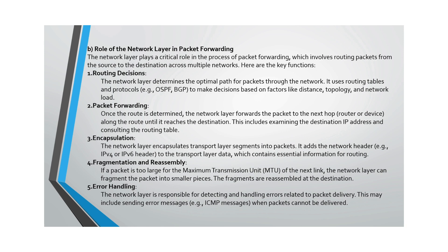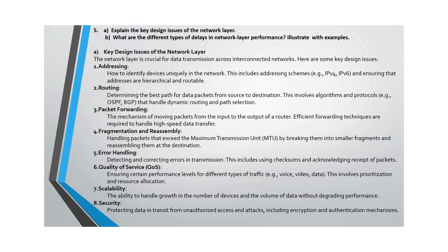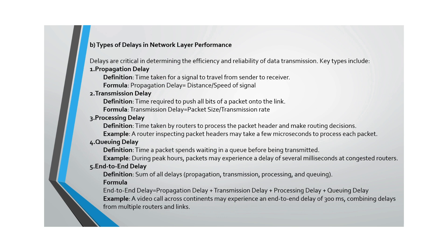Question 5 asks you to explain the key design issues of the network layer — including addressing, routing, packet forwarding, fragmentation, disassembly, and error handling. Part B asks about different types of delay affecting network layer performance, illustrated with examples.